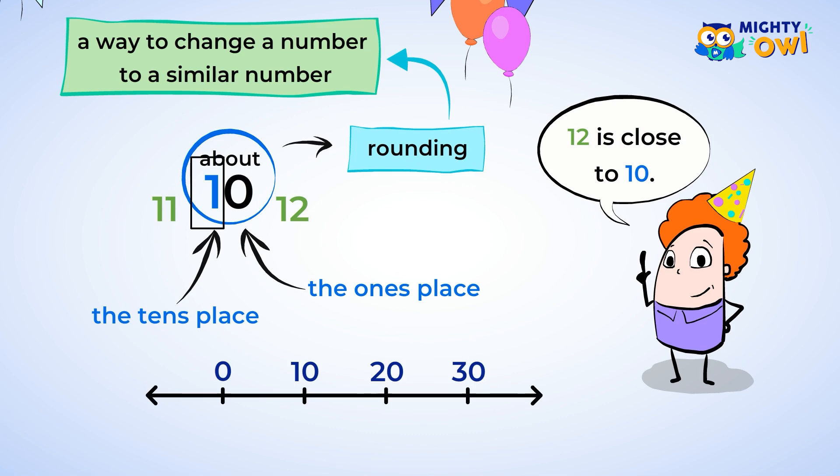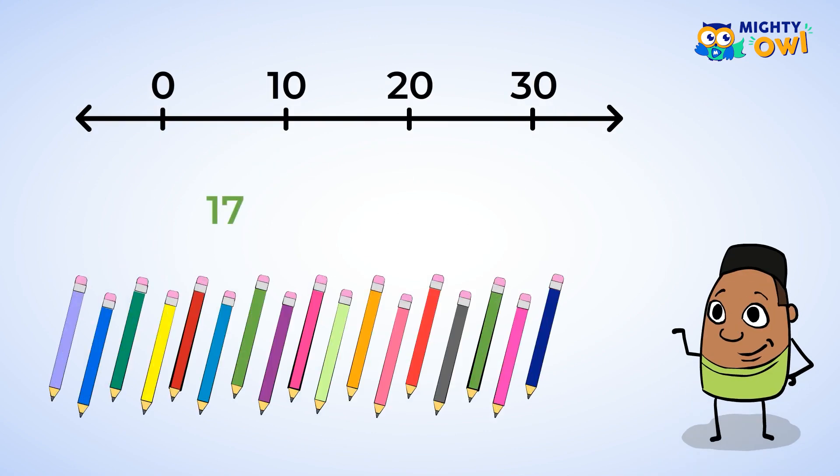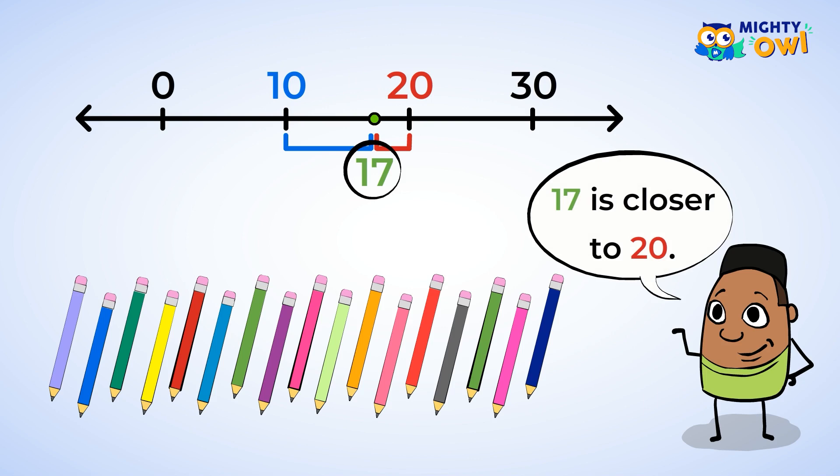Okay, let's check out how this rounding works. Let's say you have 17 colored pencils. Think about it. Is 17 closer to 10 or to 20? Well, to 20. It's only three pencils away from the 20 pencil set. But back to the number line. The number 17 is between 10 and 20. Here it is. It's closer to 20 than it is to 10. So you can just round to 20 now.